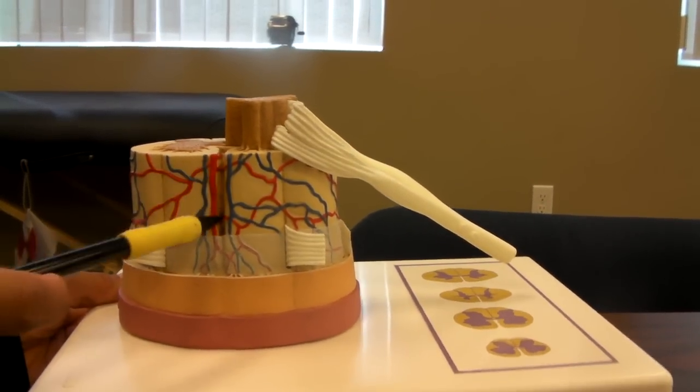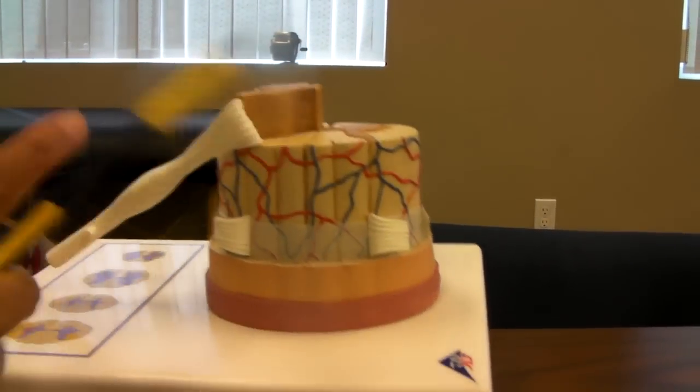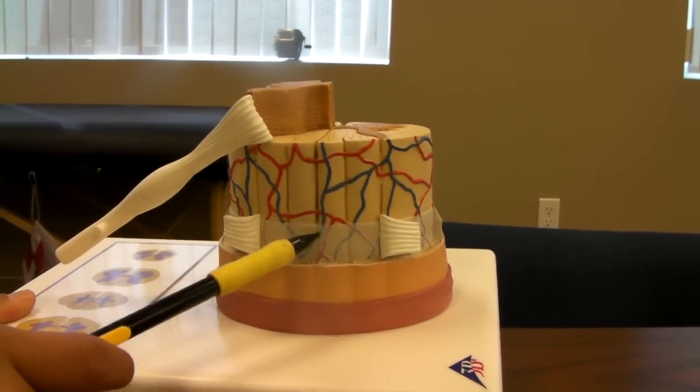And alongside of it is the anterior spinal artery, and behind it we have the dorsal median sulcus.